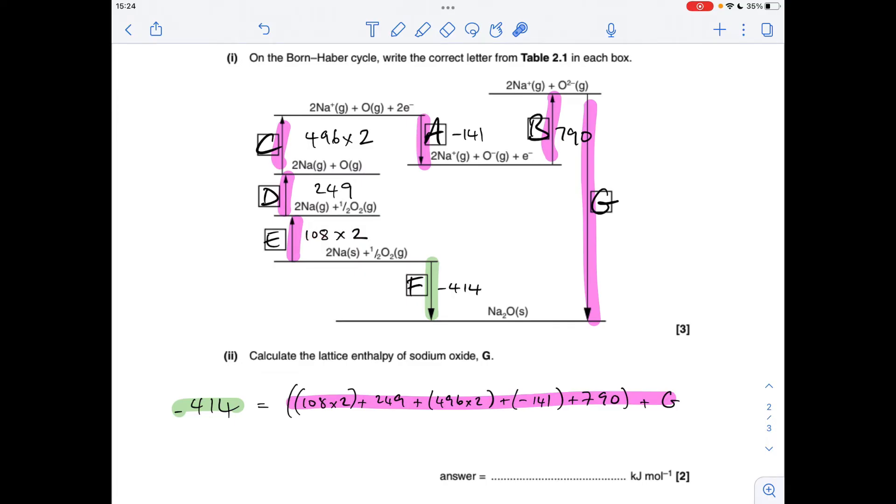I just want to pick out a couple of things. You can see this one here, we had to double this one because the enthalpy change refers to one mole of the process, whereas in the cycle we've got two moles of sodium solid going to two moles of sodium gas, so that's double the atomization process for sodium, which is why we need to double that.